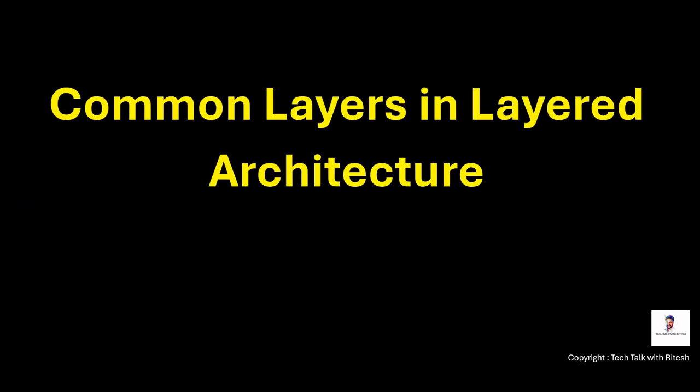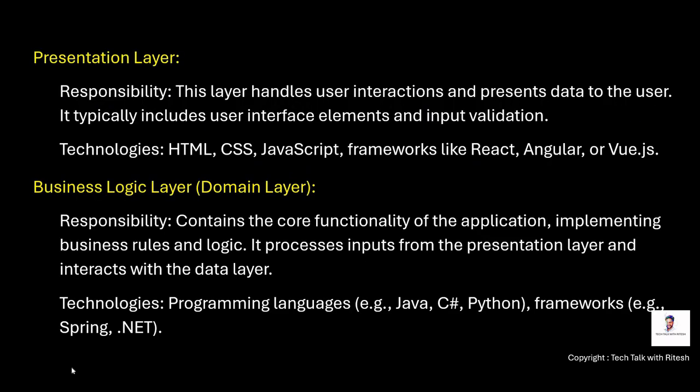Now let's see the layers in layered architecture. The first is the presentation layer. This layer handles user interactions and presents data to the user. It typically includes user interface elements and input validation. Technologies used for this layer are HTML, CSS, JavaScript, and frameworks like React, Angular, or Vue. Whenever we open any website in a browser, the very first thing we see — buttons, interaction pages, form submissions — everything is the presentation layer through which the user interacts with the system.